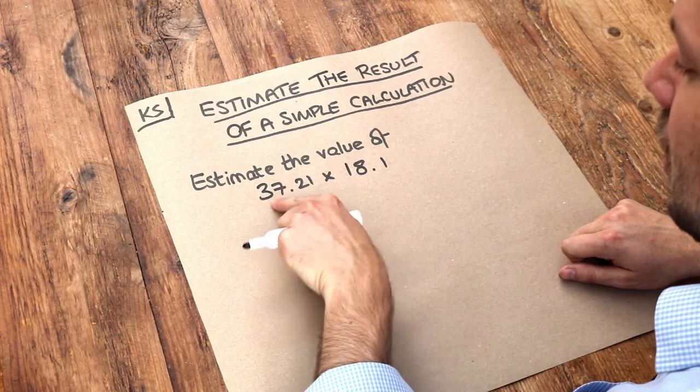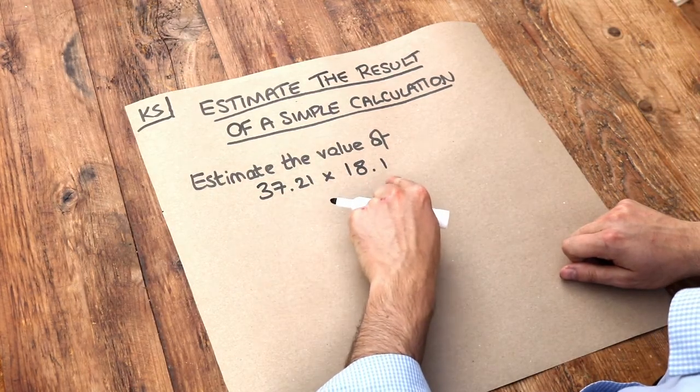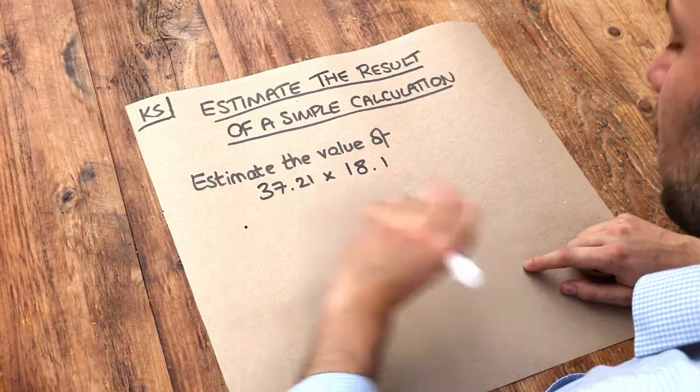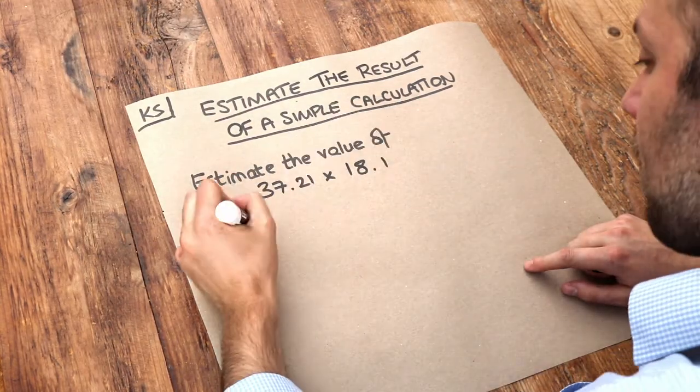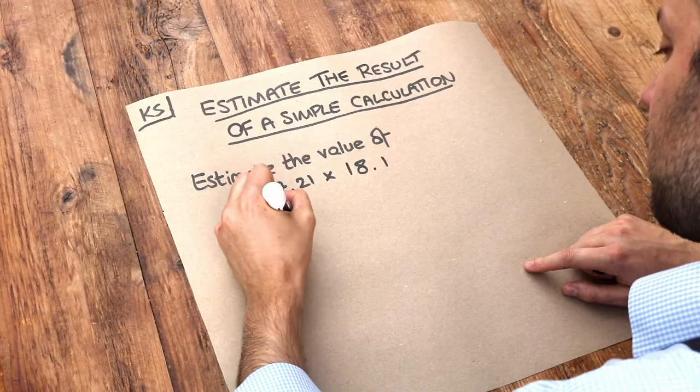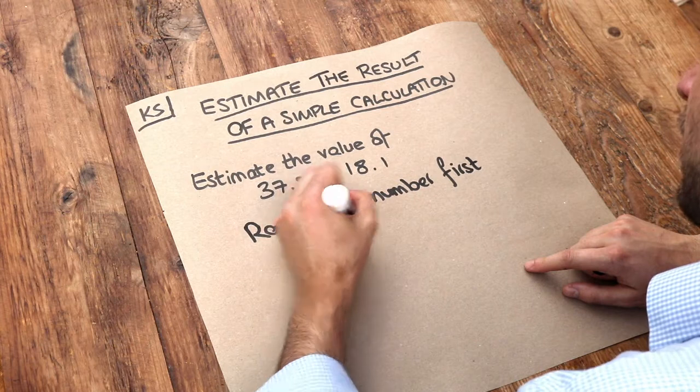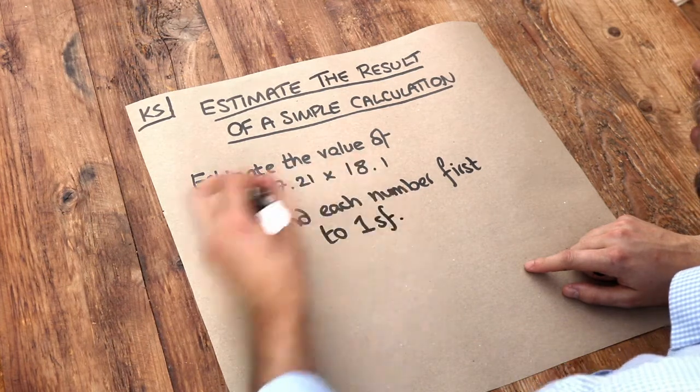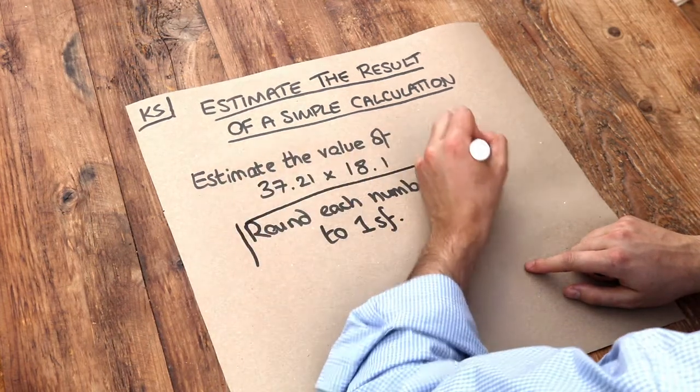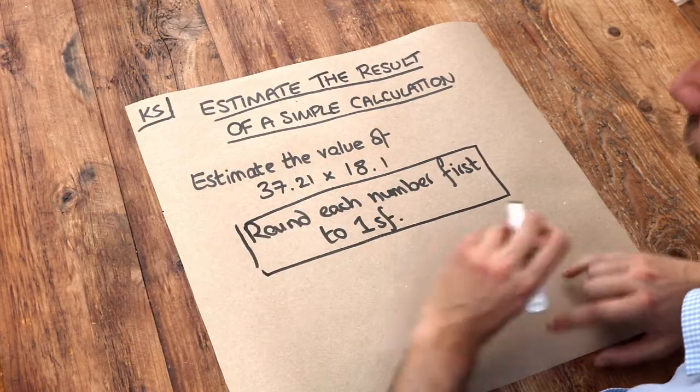Because doing 37.21 times 18.1 in your head is pretty much impossible. Now the only thing you need to remember for the purpose of exam is that you should round each number first to one significant figure. And if you don't know what significant figures are, then I recommend you watch my video on that first.